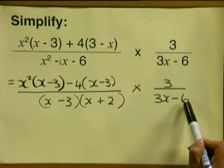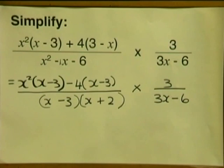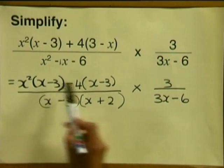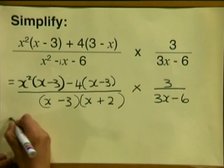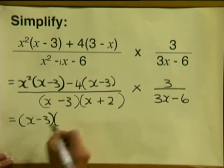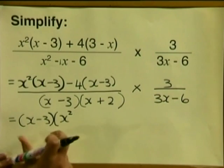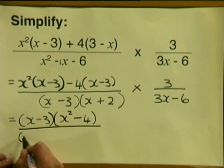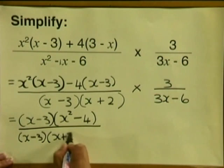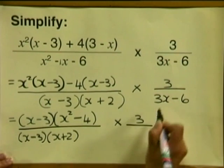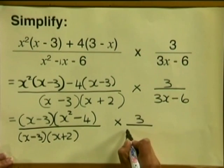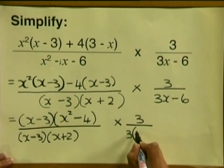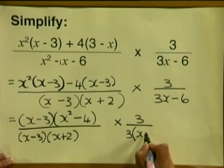Now remember everything you have learned. It is very tempting to want to cancel at this stage, but the left hand numerator and the right hand denominator still contain terms. The numerator can be factorized because we have a common bracket x minus 3. So let's factorize: we take out x minus 3, and we are left with x squared minus 4. That is all divided by x minus 3 and x plus 2, multiplied by 3. In the right denominator we have a common factor of 3: 3 into 3x gives x, and 3 into minus 6 gives minus 2.